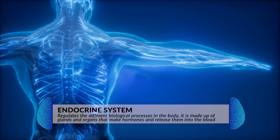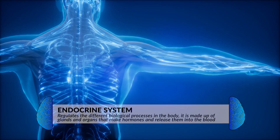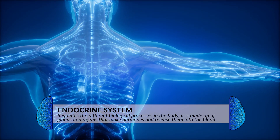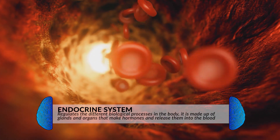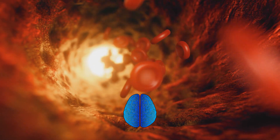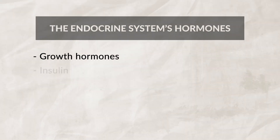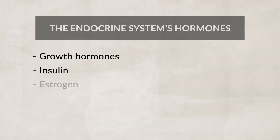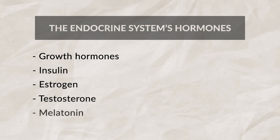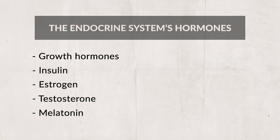The endocrine system uses glands to create hormones. After the hormones are created, the endocrine system secretes them into the bloodstream. You might be wondering what these hormones are — well, there are a lot of them, but a few examples include growth hormones, insulin, estrogen, testosterone, and melatonin, just to name a few.